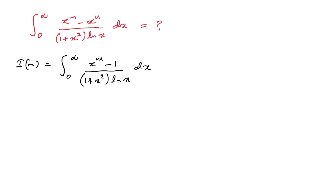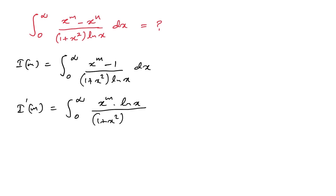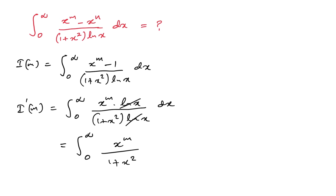According to Feynman's technique, we should differentiate with respect to m. So I'(m) is equal to the integral from 0 to infinity of x to the m times natural log of x over (1 plus x squared) times natural log of x, dx. Now the natural log of x terms cancel, and we have the integral from 0 to infinity of x to the m over (1 plus x squared), dx.